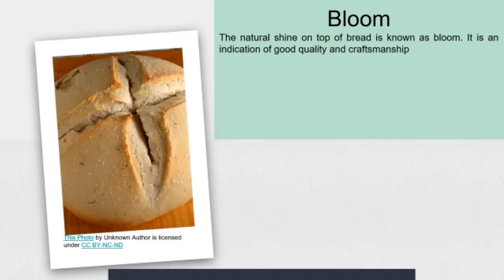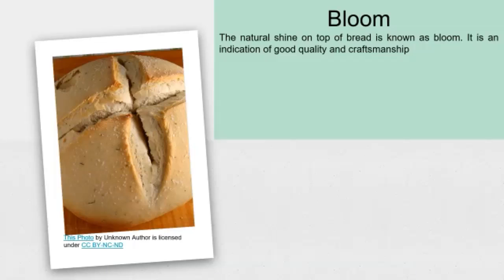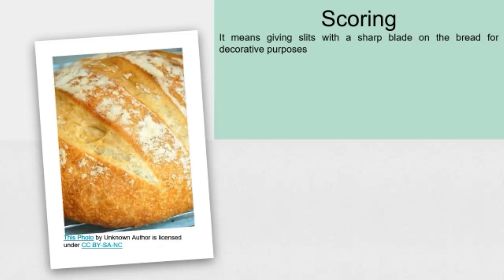The next word is bloom. The natural shine on top of bread is known as bloom. It is an indication of good quality and craftsmanship. Scoring means giving slits with a sharp blade on the bread for decorative purposes. Whether to slit or not depends on the baker, but baguette is the only bread which is always scored.